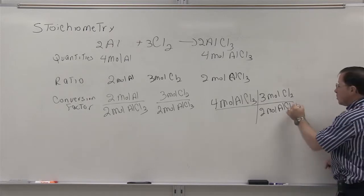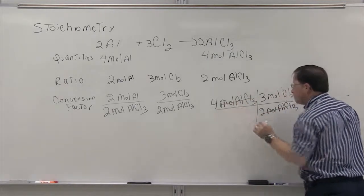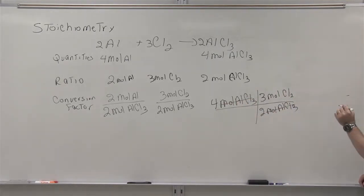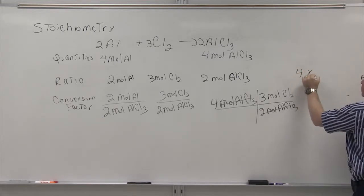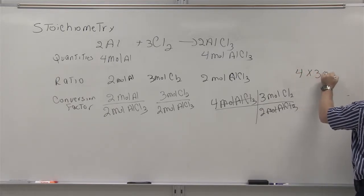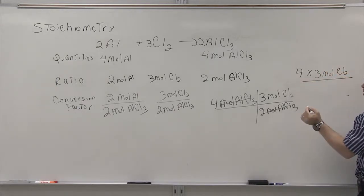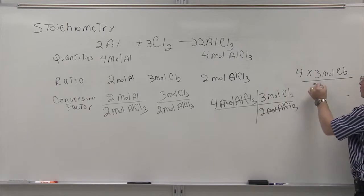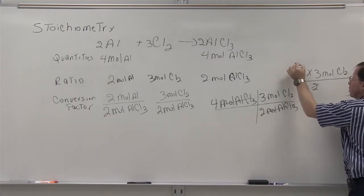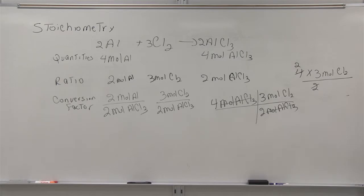Once again, your moles of aluminum chloride are going to cancel. And you're left with four times three moles of chlorine over two. If you're good at mathematics, you know that this can simplify. And so you're left with six moles of chlorine.